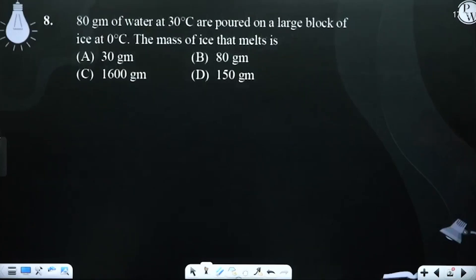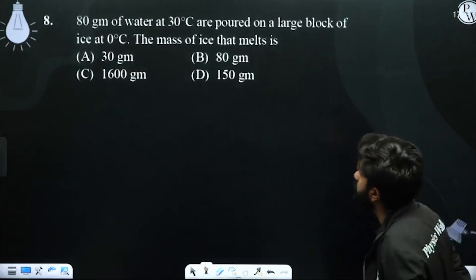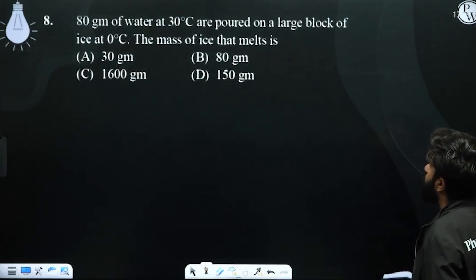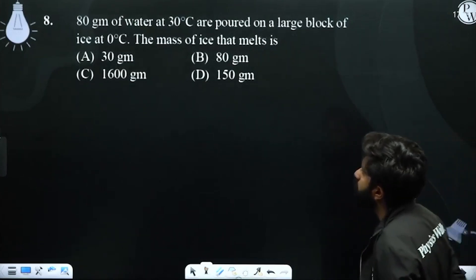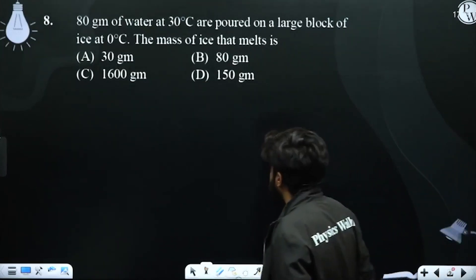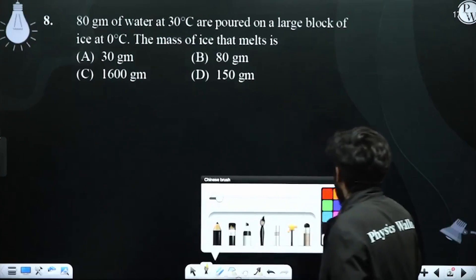The next question is: 80 grams of water at 30 degrees Celsius are poured on a large block of 0 degrees Celsius ice. Find the mass of the ice that melts. It is very easy.